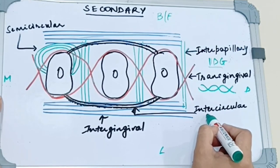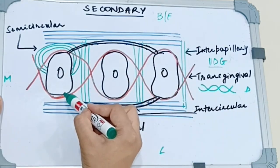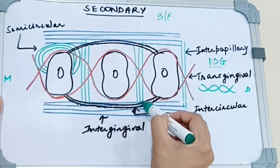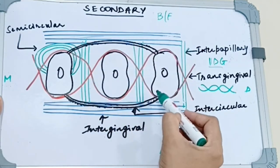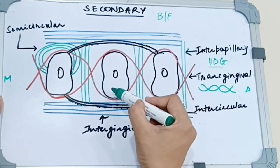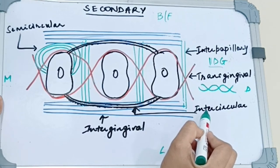Next we have the intercircular fibers. Intercircular fibers extend from the cementum on the distal surface of the tooth, then splay lingually as well as buccally and insert into the mesial surface of the next tooth, not the adjacent tooth but the next tooth. These are the intercircular fibers.